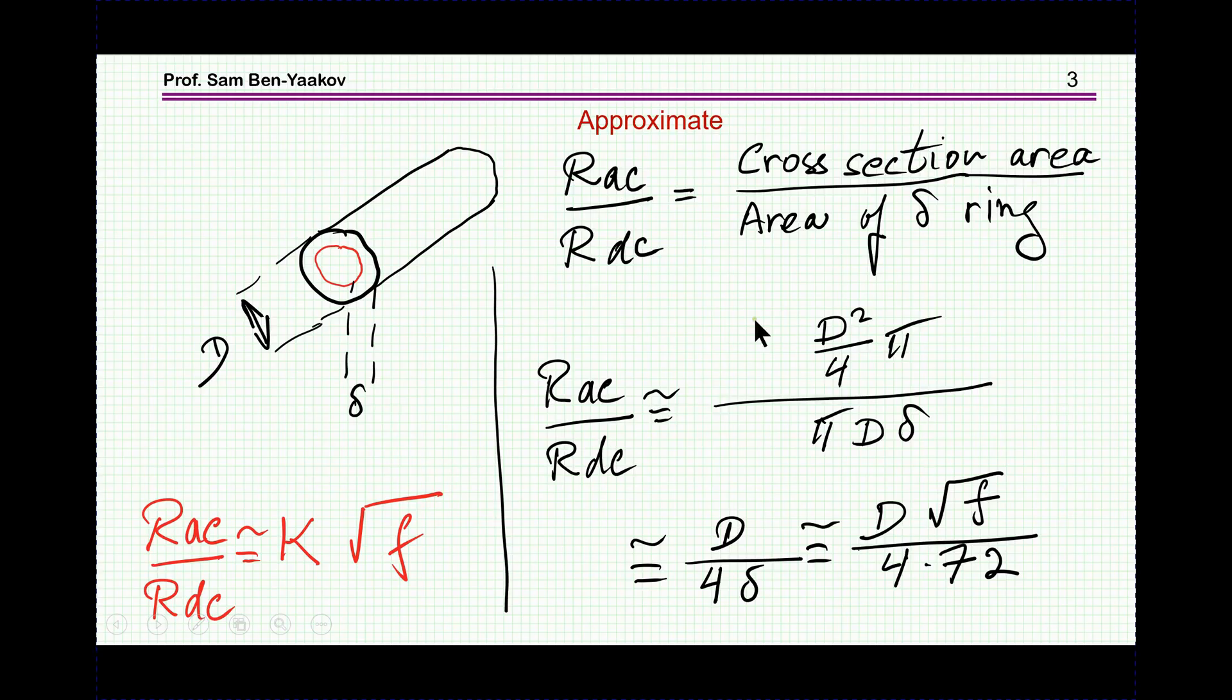So therefore we have here, this is the total cross area, and here this is an approximation, in which I've taken the length here, the length, and multiplied it, the length is pi D, multiplied by the thickness. It's an approximation of course.